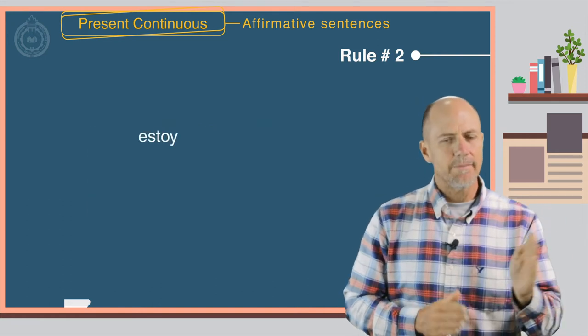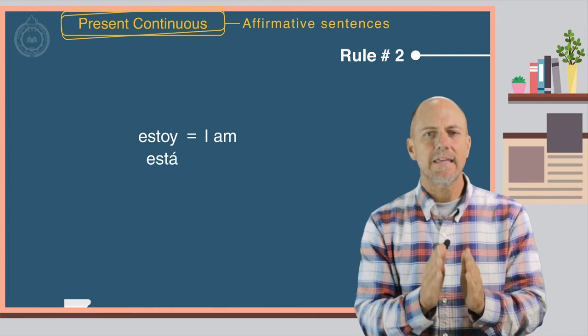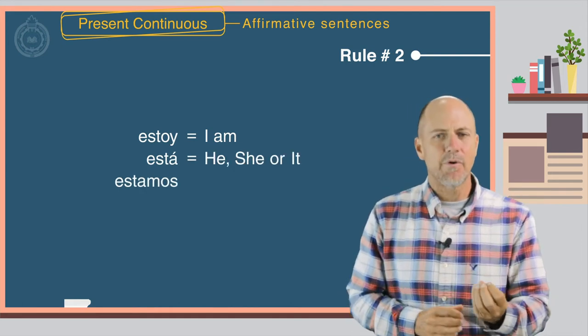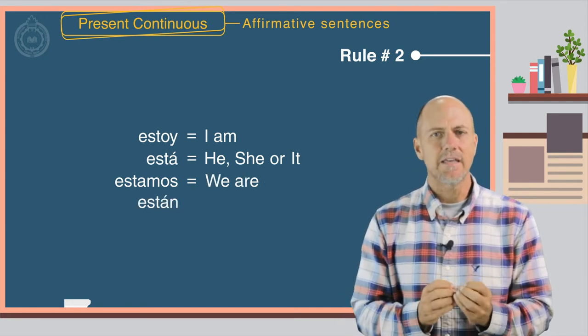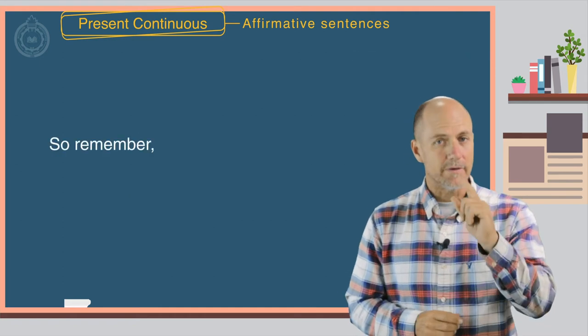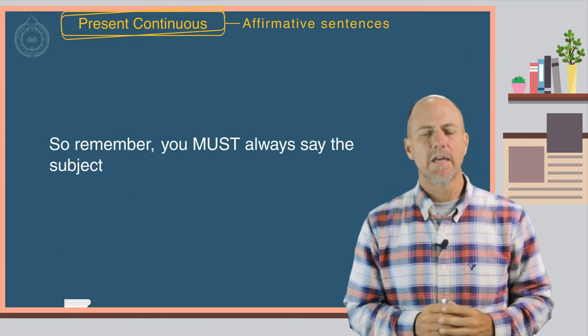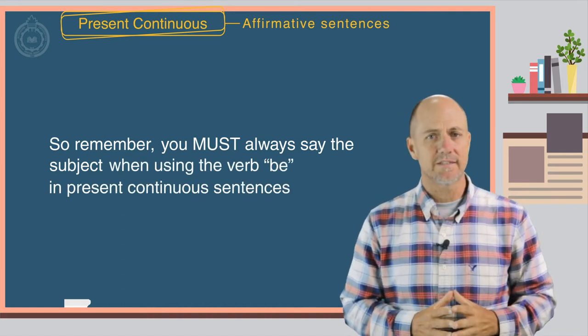Estoy equals I am. Está equals he, she, or it. Estamos equals we are. And están equals they are. So remember, you must always say the subject when using the verb be in present continuous sentences.